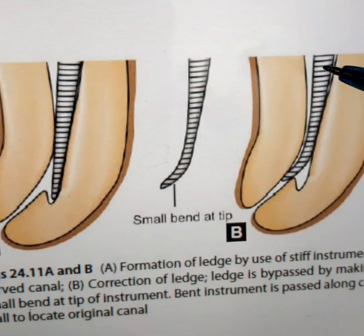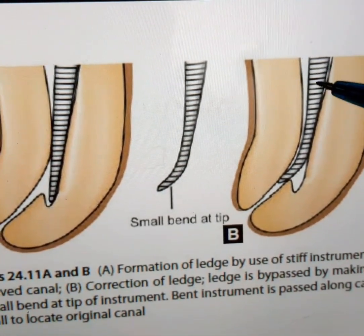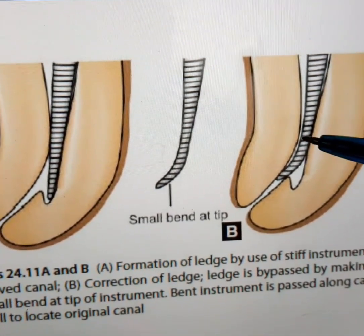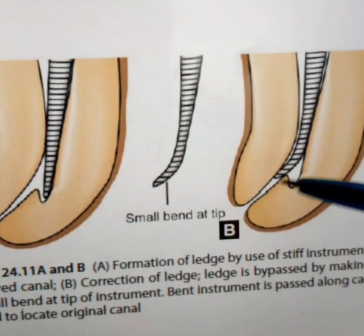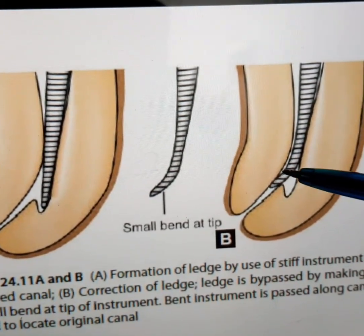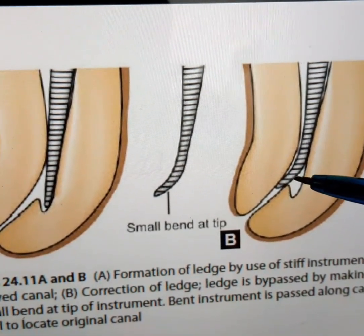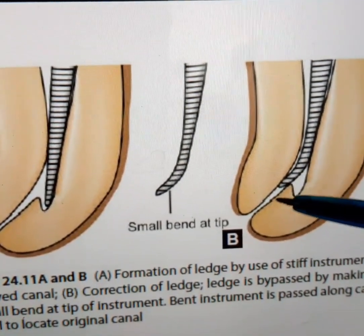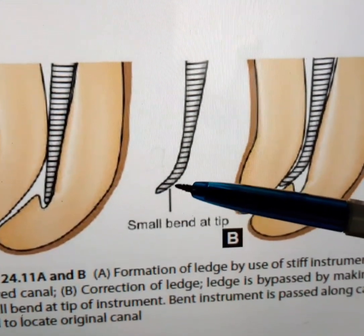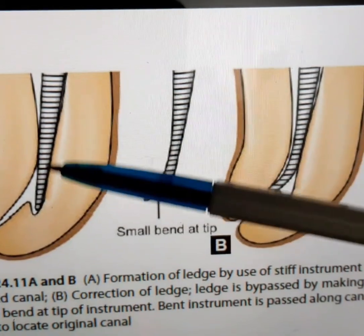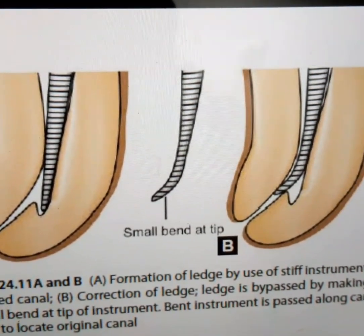Here we have placed this flexible file into the curved root canal in order to let the tip of the file reach the inner curvature. This shows the difference between a stiff instrument and a flexible instrument.